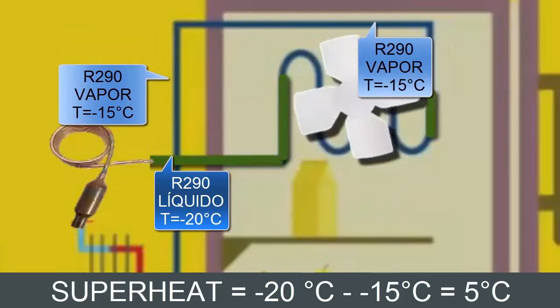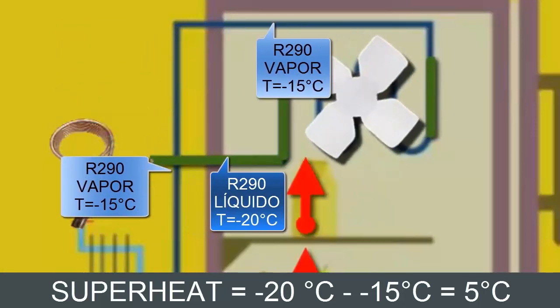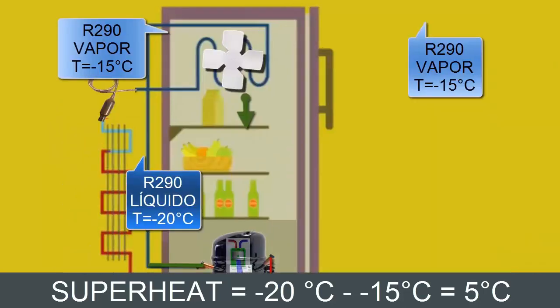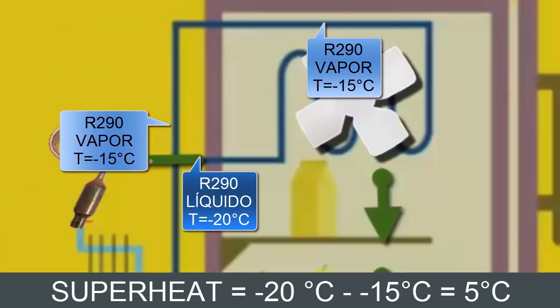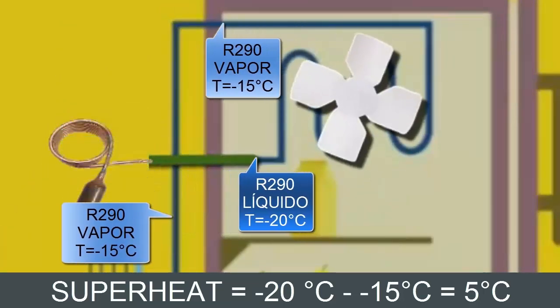Although the temperature has a slight change, the same does not happen with the pressure. We can approximate and say that the R290 pressure at the evaporator outlet is practically the same.